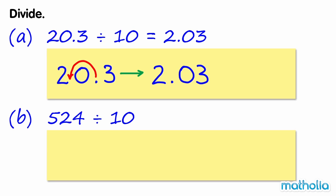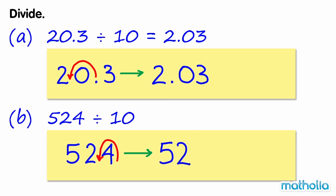B. 524 divide 10. Shifting the decimal point one place to the left gives 52.4. So 524 divide 10 equals 52.4.